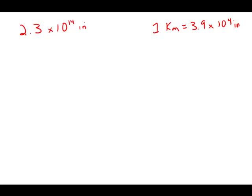Well, if we wanted to change inches to feet, of course one inch is 1/12 of a foot, we would divide the number of inches by 12. Here we want to change to kilometers, and one kilometer equals 3.9 times 10 to the 4th inches. So we're going to take this and divide it by 3.9 times 10 to the 4th. So that's hurdle number one: knowing which numbers to divide in the problem.